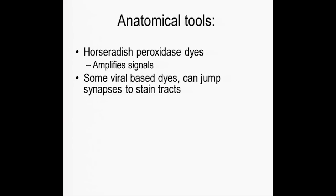There are also lots of molecular tools for staining brain slices, such as horseradish peroxidase. One of the problems is that when cells are really small, a little bit of stain doesn't go very far. So you want something where you put in a little bit and it causes an almost autocatalytic reaction, which causes more of it to bind up so you can amplify a signal that was very small to start. Horseradish peroxidase is really good for that.